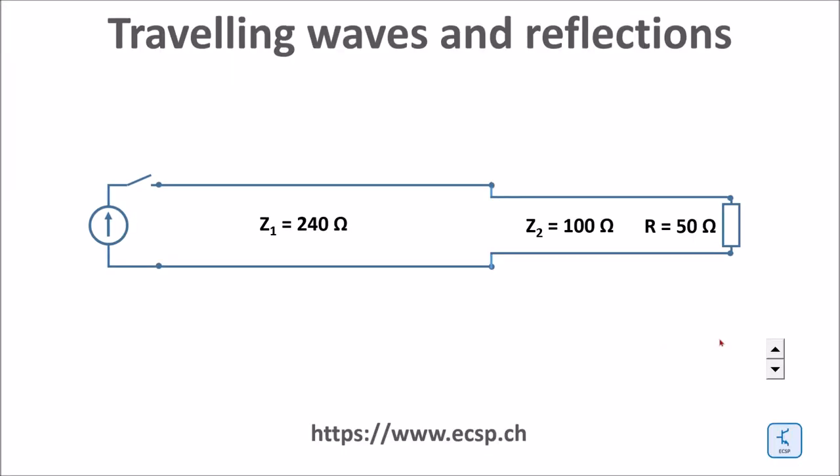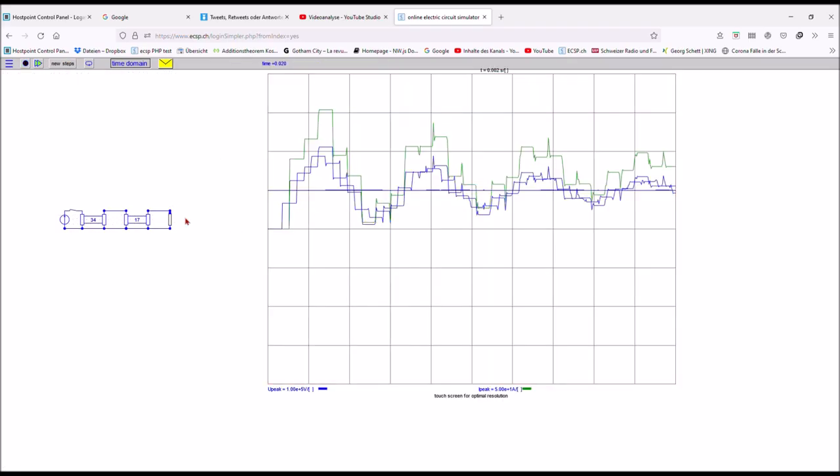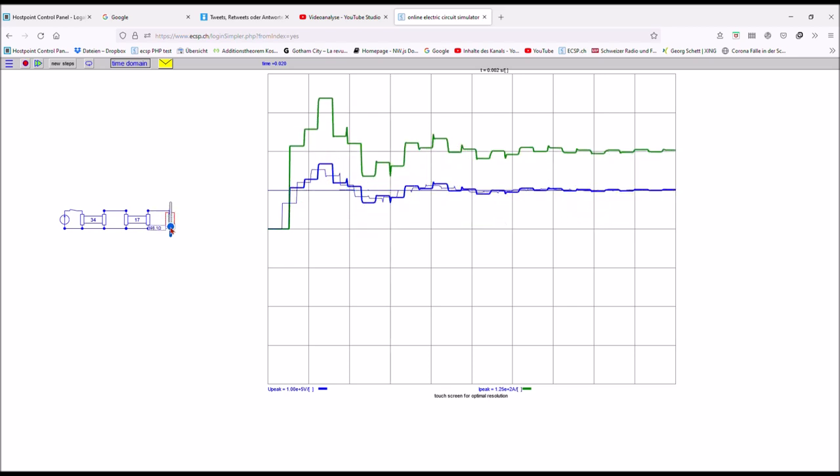Now at the line end I connect the second line with a different impedance instead of the lumped resistance. You can see the reflection at the discontinuity and the propagation of the wave into the second line. To make the case on the simulator I have added also here a second a little bit shorter line and I vary the amount resistance at the end to show the effect.